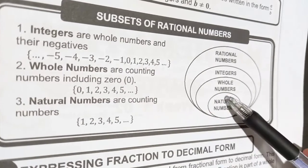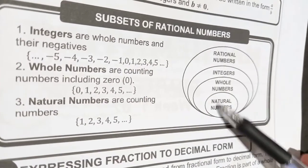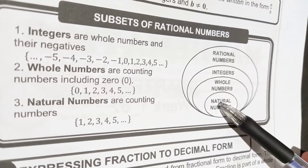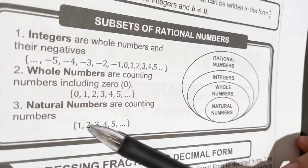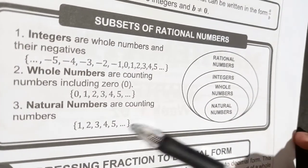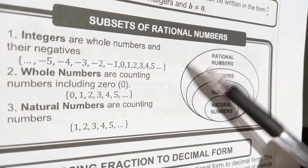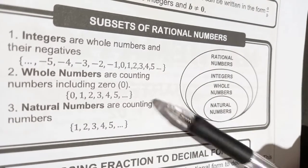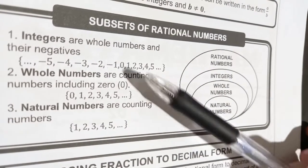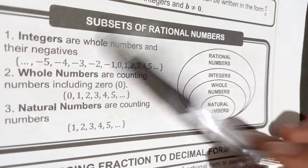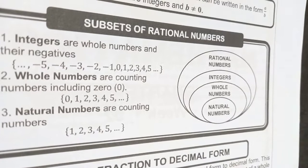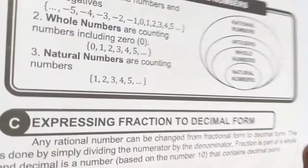The last one, the inner one, it's the natural numbers. Natural numbers are simply one, two, three, four, five, so on and so forth without their negatives. Including their negatives, therefore, they are integers.